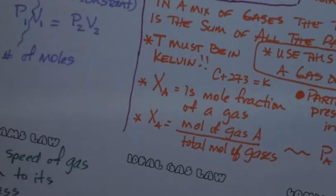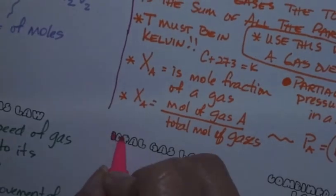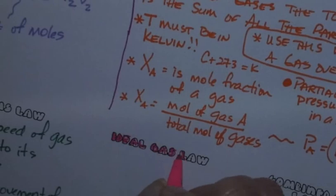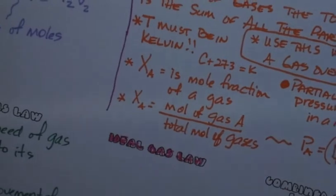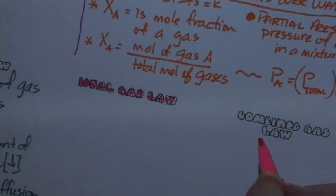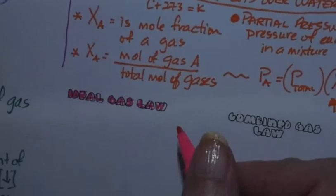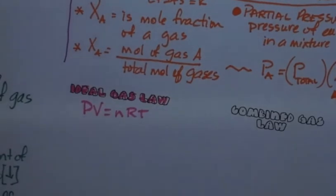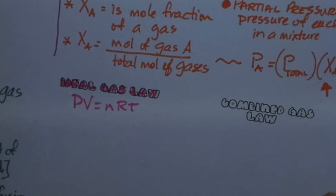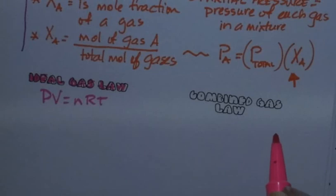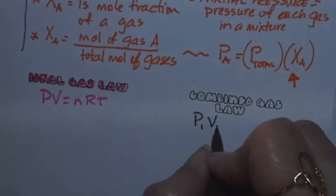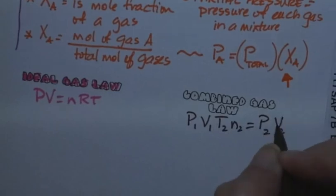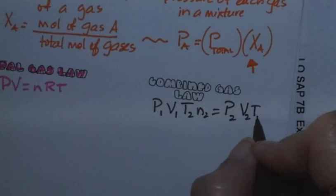The most useful thing here is the ideal gas law — you're going to use this one a lot. There are two big equations for gases: the ideal gas law and the combined gas law. The ideal gas law is PV = nRT — you can remember it as 'perv-nert.' The combined gas law is P1V1/T1n1 = P2V2/T2n2.